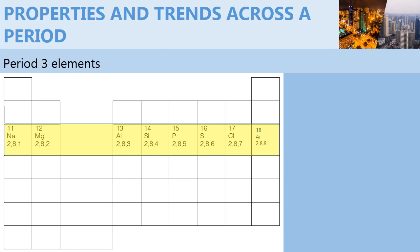Now the members of period 3 include sodium, magnesium, aluminum, silicon, phosphorus, sulfur, chlorine and argon.